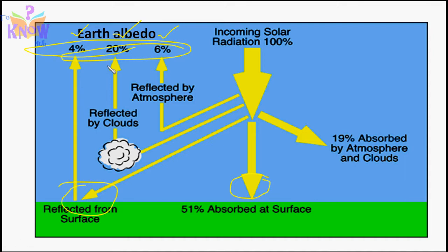We lose around 30% of solar radiation through these three processes. The reflectivity of the surface is often described as albedo. Earth's average albedo — reflectance from both surface and atmosphere — is about 30%: 20% by clouds, 6% by other elements of the atmosphere, and 4% from the surface. Additionally, 19% of solar radiation gets absorbed by the atmosphere.